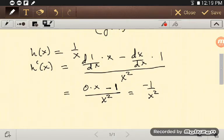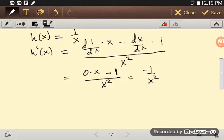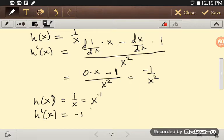Okay, but 1 over x, we can use the power rule. h(x) equals 1 over x equals x to the negative 1. And so, h prime of x is negative 1 times x to the negative 1, minus 1. And that's negative 1 times x to the negative 2, but I can write that as negative 1 over x squared.